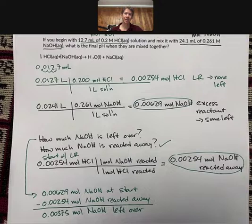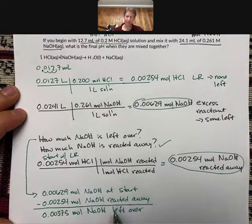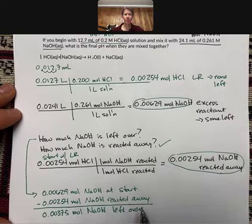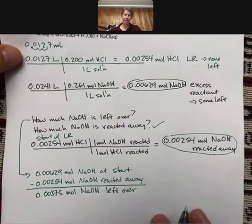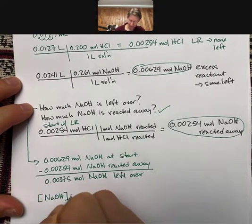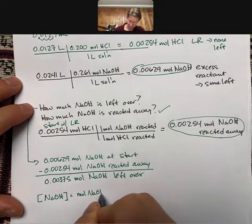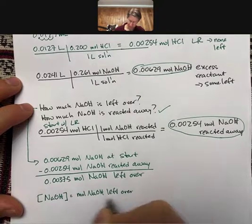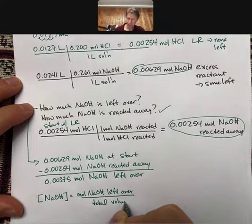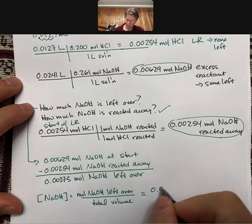This is the in-detail version of what we've done before, showing you how this moles of sodium hydroxide reacted away, how we get that. Now we'll finish the problem by doing what we did in some of the other videos and in the lecture outlines. So we need our concentration of sodium hydroxide, which is going to be moles left over over total volume. And we know our moles left over from right here, 0.00375.